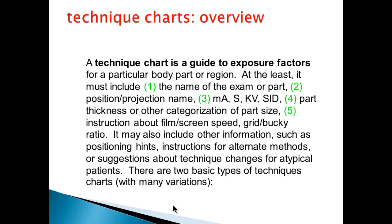A technique chart is usually based on a particular body part, perhaps a region or area, and it could get down to a particular view. It needs to have several parameters: the name or exam, the position, projection if indicated, mA, time, KV, and SID. There may also be categories for film screen speed or grid ratio, remembering that as the grid ratio goes up, so will your exposure.